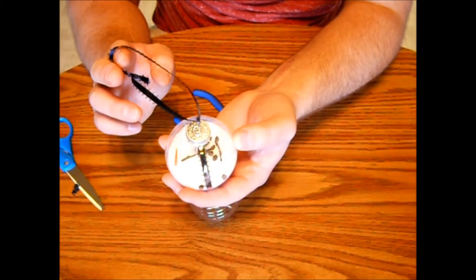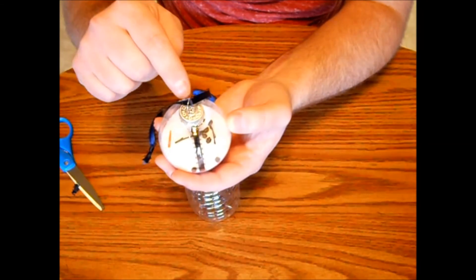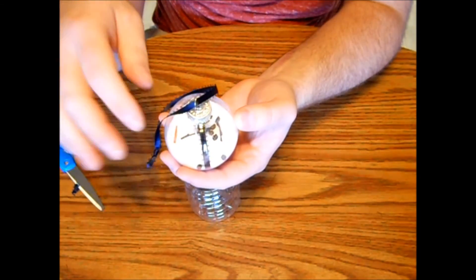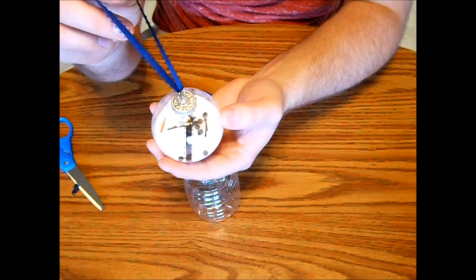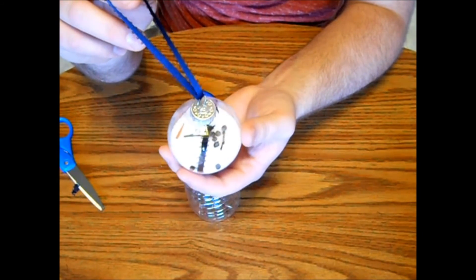Now if you have some rambunctious children in your family that are hell-bent on destroying everything, you may want to put some super glue on the top here to keep them from opening it. But I don't think it's really necessary. And now, our melted snowman ornament is finished.